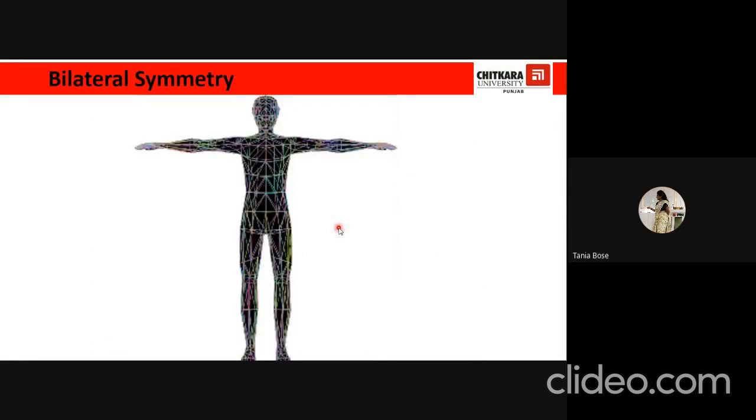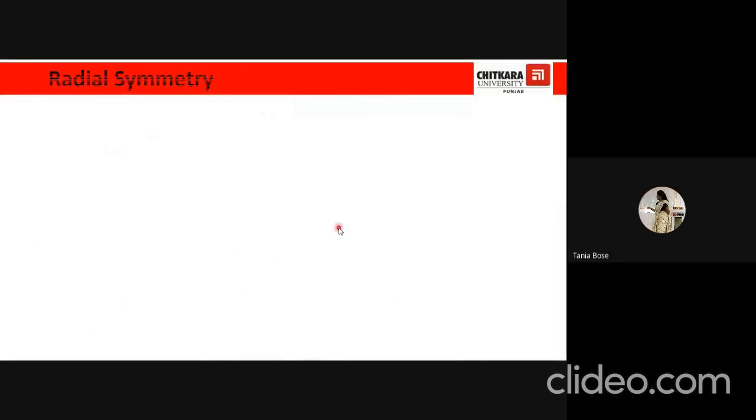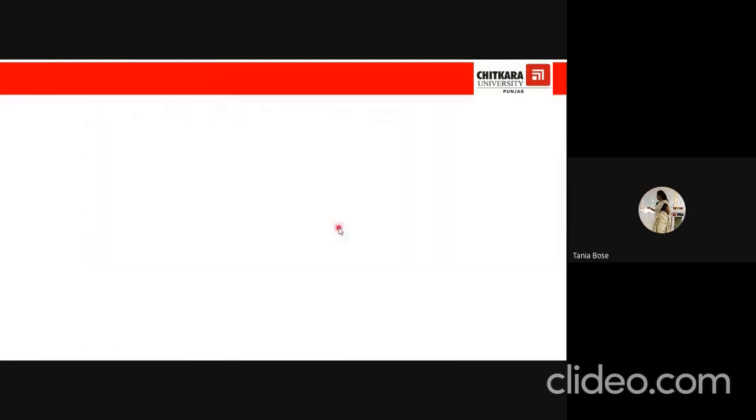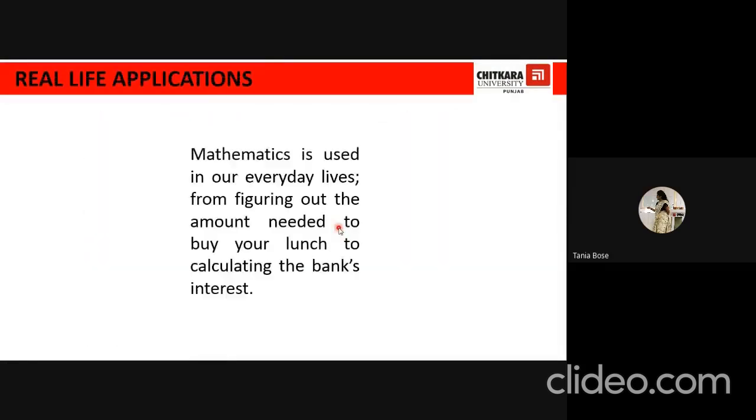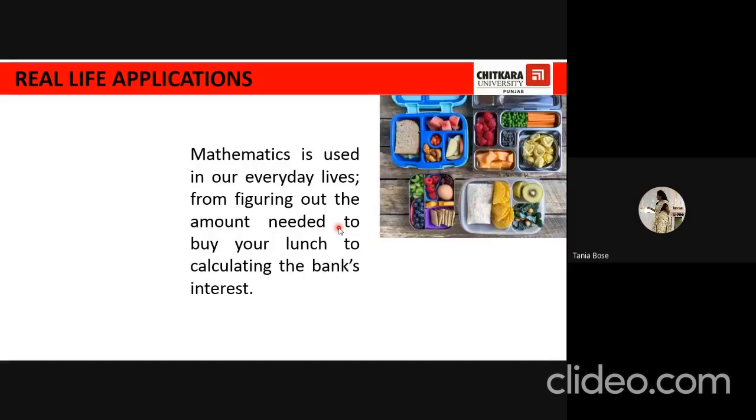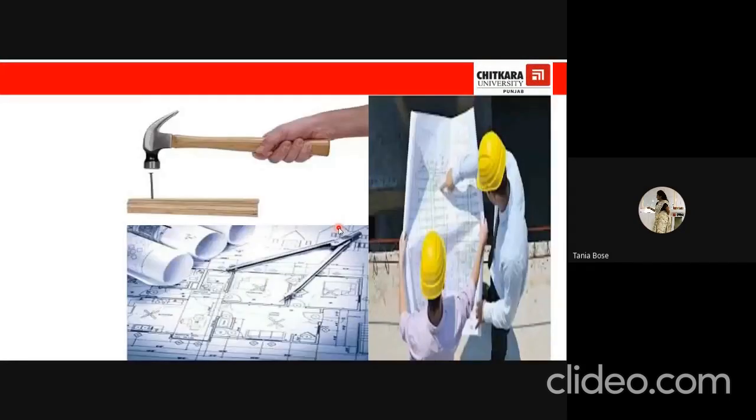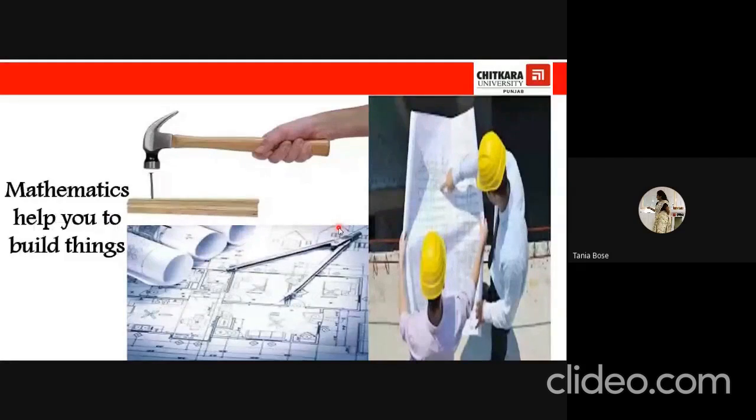Look at the human body. We are bilaterally symmetric. The left part of our body gets resembled to the right part of our body. In a starfish, it is radially symmetric. Now from nature, we move on to the real-life applications. Maths, it is used in our everyday lives. From figuring out the amount needed to buy your lunch to calculate the bank's interest. As India, we can see that mathematics helps the civil engineers to build things. They need it every now and then to construct their buildings.